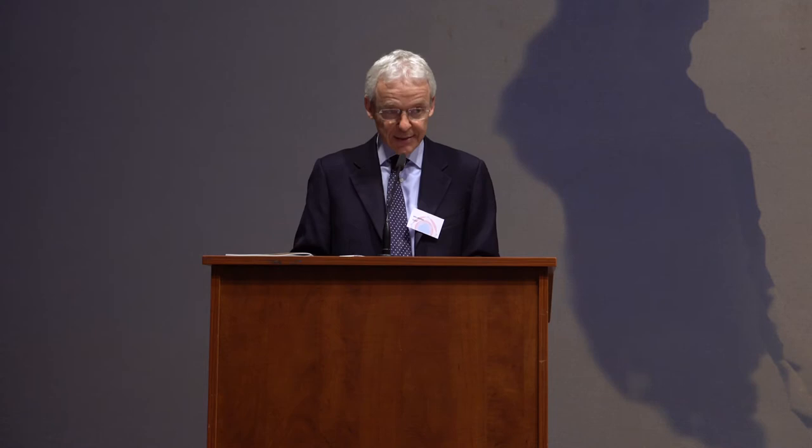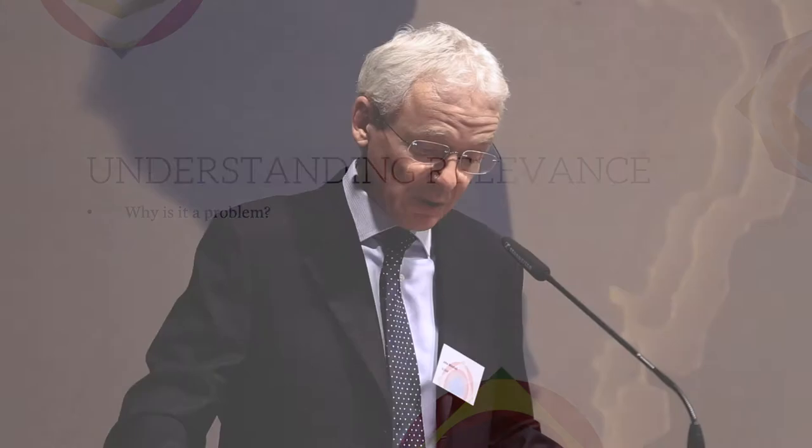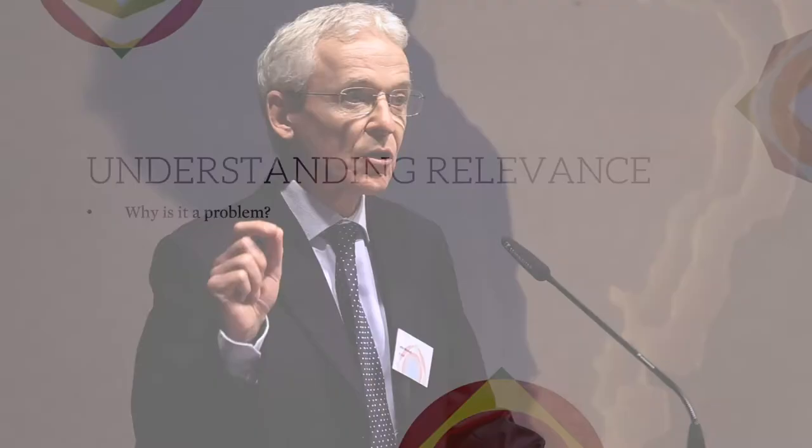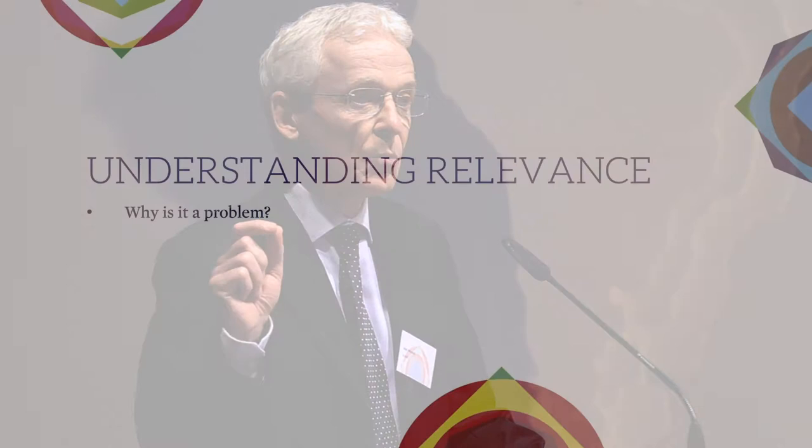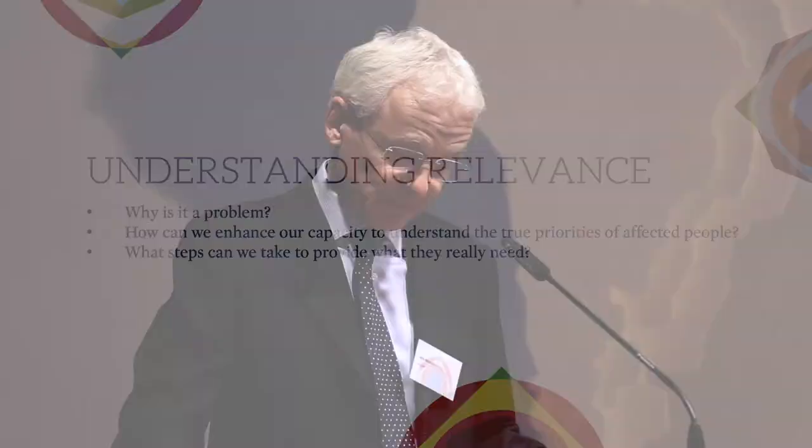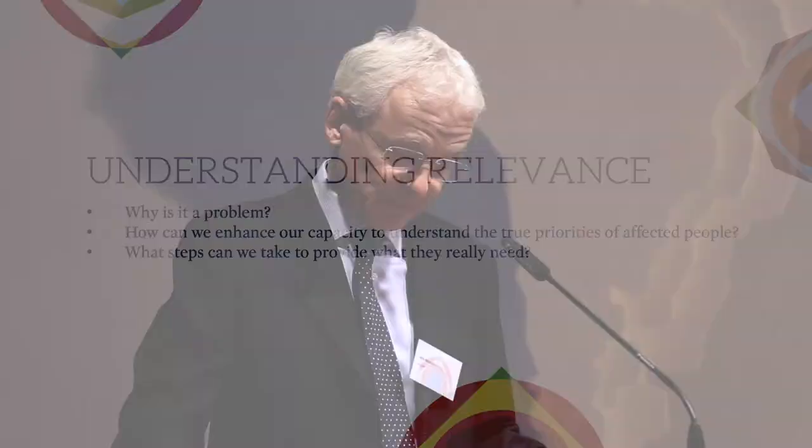Providing what people need in a crisis is obviously one of the most basic elements of humanitarian assistance, but the mismatch about what people really need and what they receive has been a problem for decades, and unfortunately it still is. I'll address two key questions: how can we better understand the true priorities of affected people, and what tangible steps can we take to provide what they really need?